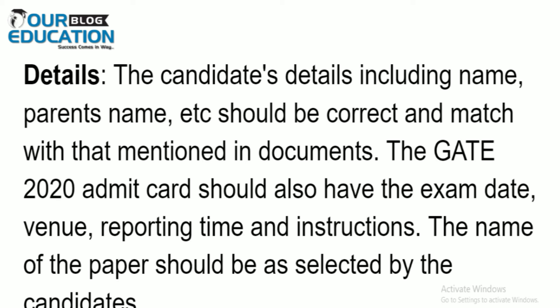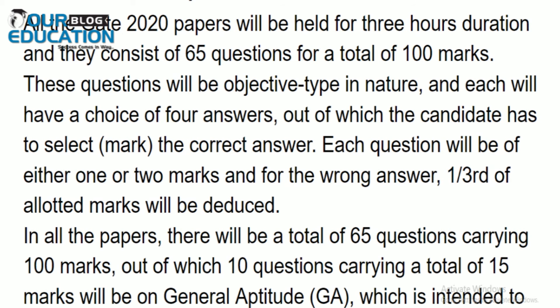The GATE 2020 admit card should also have the exam date, reporting time, and instructions, and the name of the paper should be as selected by the candidate. Regarding the exam pattern, all GATE 2020 papers will be held for three hours and consist of 65 questions for a total of 100 marks. Questions will be objective type with four answer choices. Each question carries either one or two marks, and for a wrong answer, one-third of the allotted marks will be deducted. Out of 65 questions, 10 questions carrying 15 marks will be on General Aptitude, testing language and analytical skills.